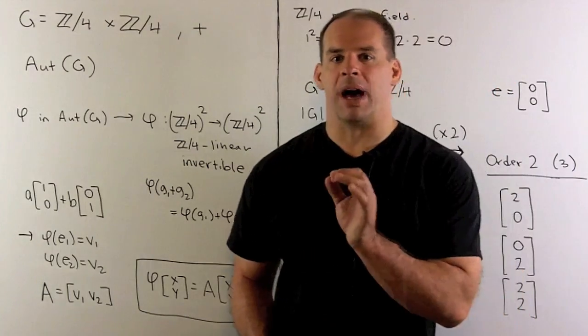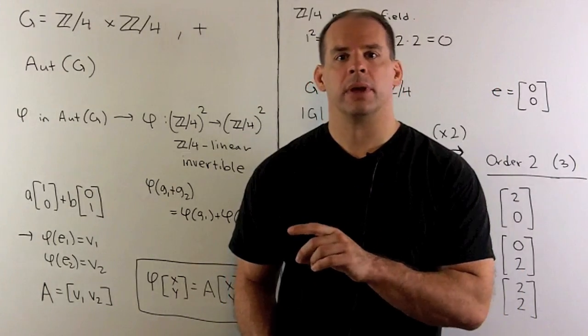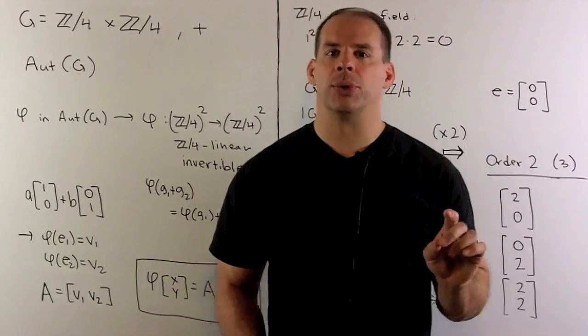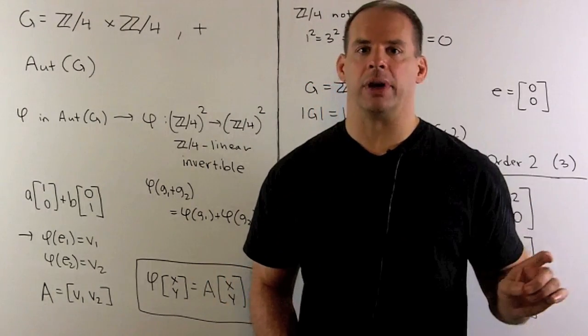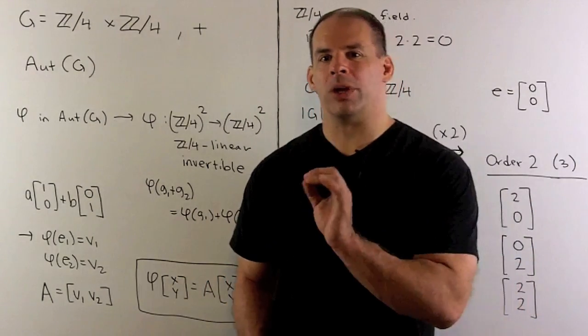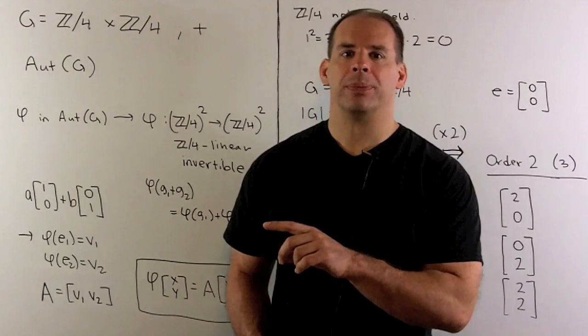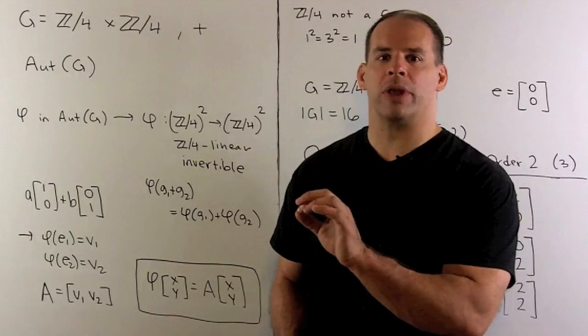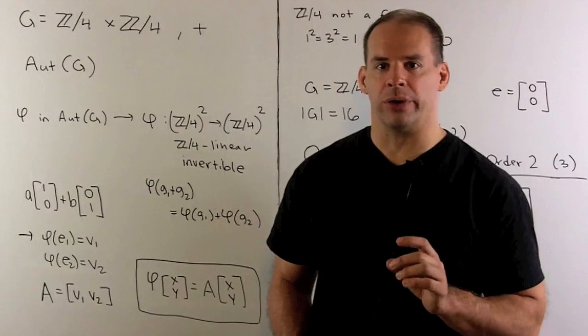Now, Z mod 4 is not a field, so we're moving from finite fields in linear algebra over to commutative rings and module theory. We don't want to use all that machinery, so we're just going to do linear algebra as usual. We'll have to make sure that our results hold when we have zero divisors.